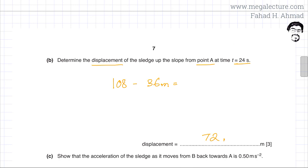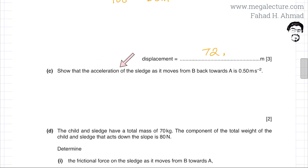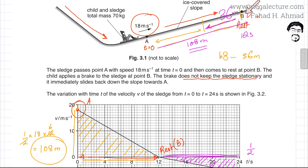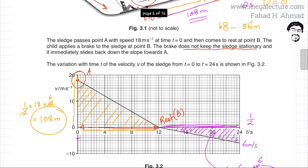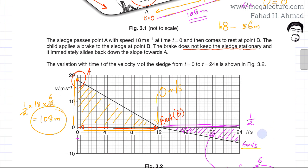The next part asks us to show that the acceleration of the sledge as it moves from B back towards A is 0.5 meters per second squared. Moving backwards from B, the initial velocity u equals 0. From the graph, the final velocity at t equals 24 seconds is 6 meters per second. So we go from 0 to 6 meters per second, and the time taken between these two points is 12 seconds.